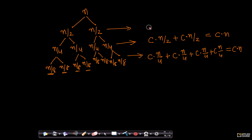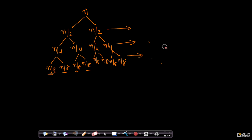So I can erase the individual terms and simply say: the time complexity to merge at each stage of the tree is c·n. This is c·n at the top level, 2·c·(n/2) = c·n at the second level, and c·n again at the third level.